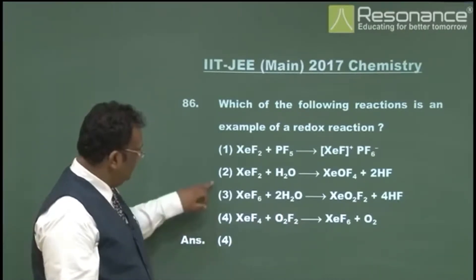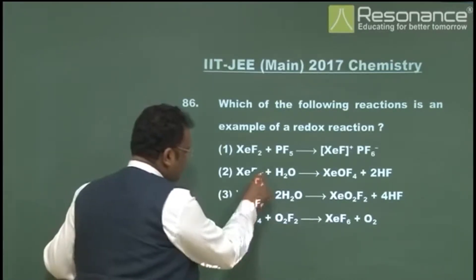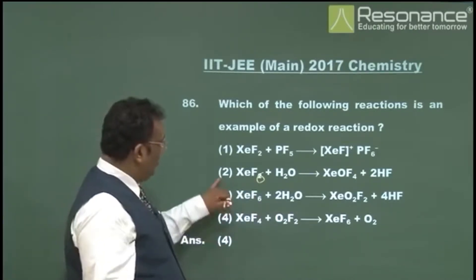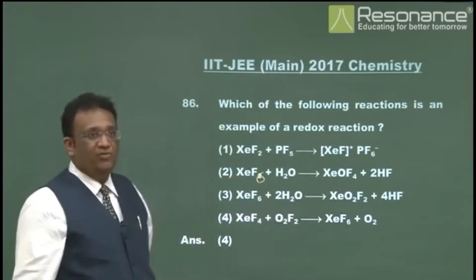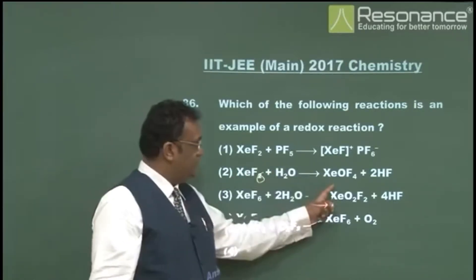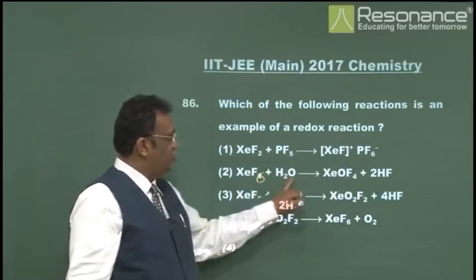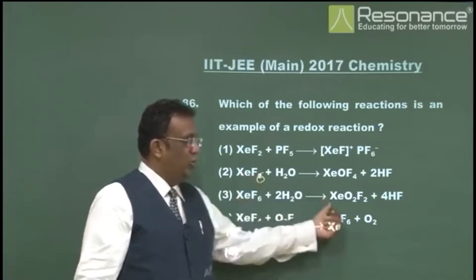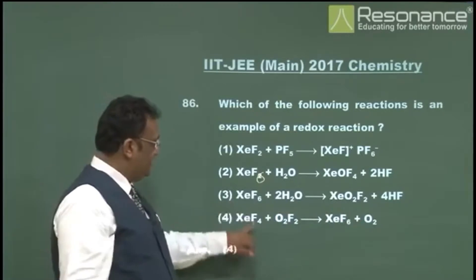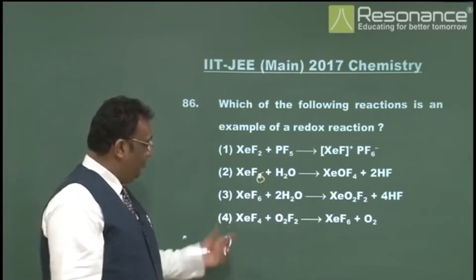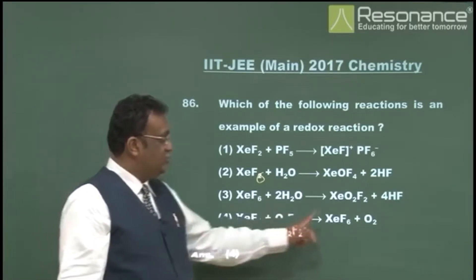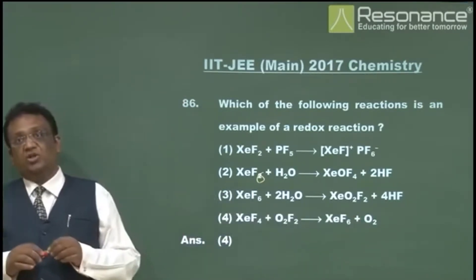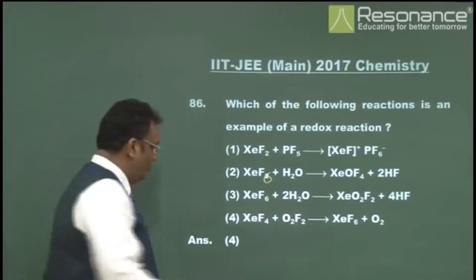There is a misprint: the question has XeF₆ (not XeF₂). Hydrolyzing XeF₆ gives XeOF₄: xenon remains +6, fluorine −1, oxygen −2, and hydrogen +1 — no redox. Similarly, XeO₂F₂ has xenon as +6 with no oxidation-reduction. But in option 4: xenon changes from +4 to +6 (oxidation) and oxygen goes from +1 to 0 (reduction). This is a redox reaction. The answer is option 4.